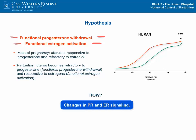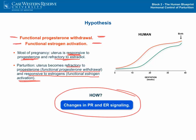We hypothesize that for most of pregnancy, the uterus is responsive to progesterone and refractory to estradiol, maintaining quiescence. Parturition is then triggered by a switch: the uterus becomes refractory to progesterone, causing a functional progesterone withdrawal, and it becomes responsive to estrogens, causing a functional estrogen activation. Current research suggests this involves changes in the signaling pathways triggered by the progesterone and estrogen receptors.